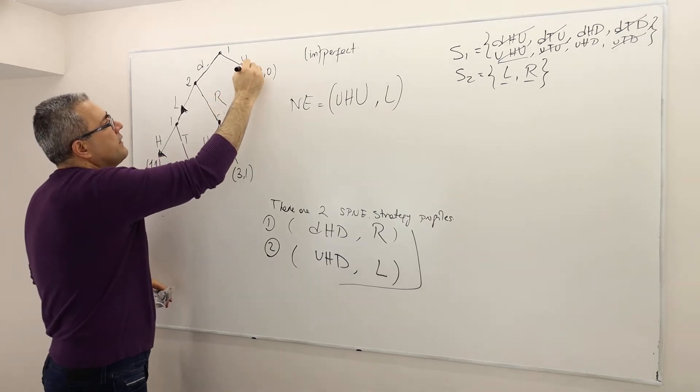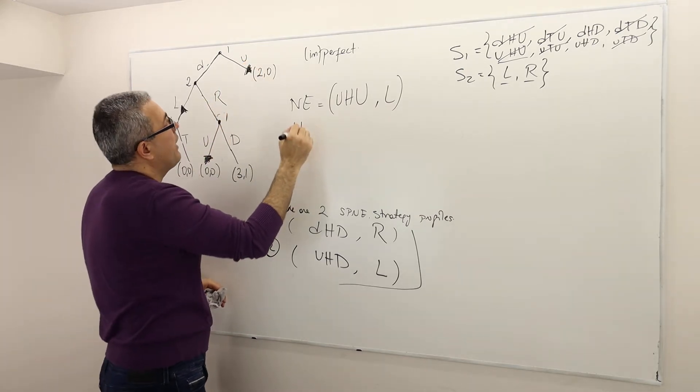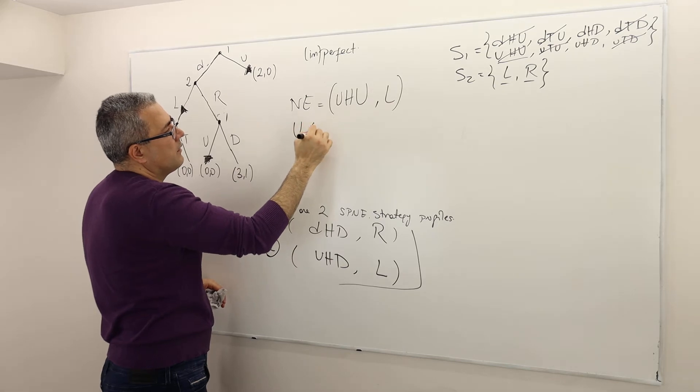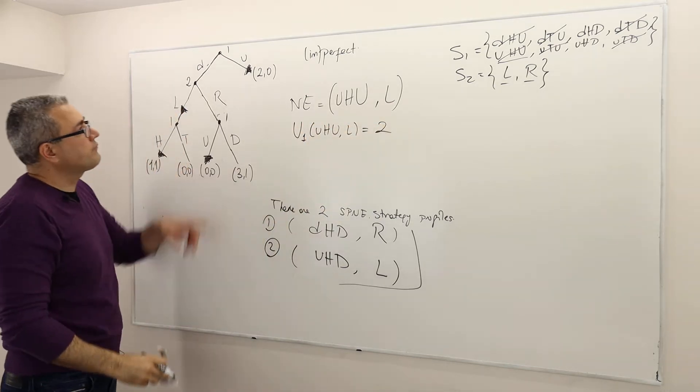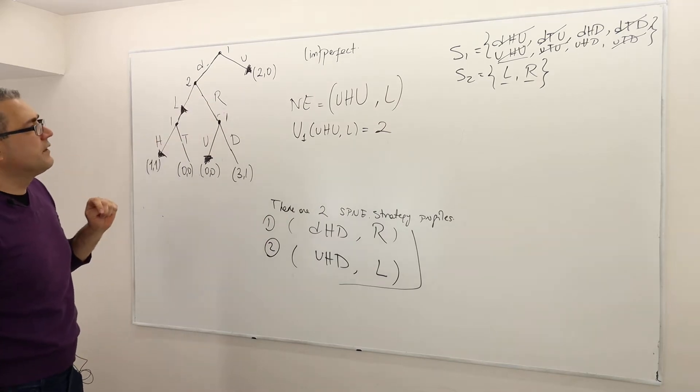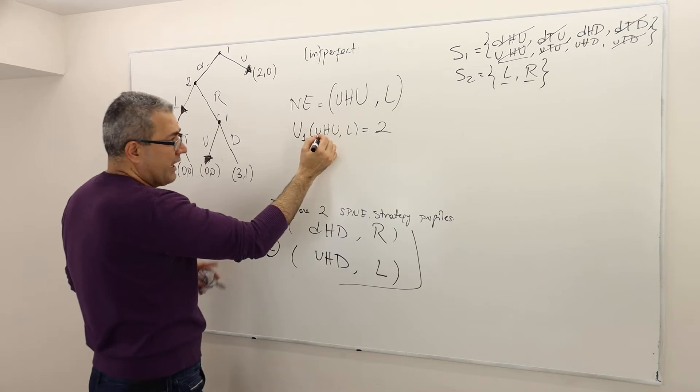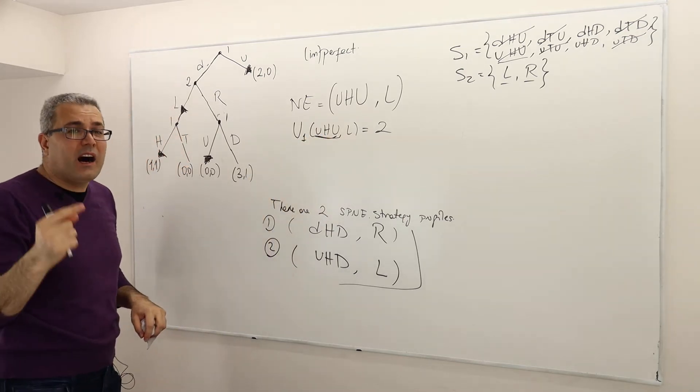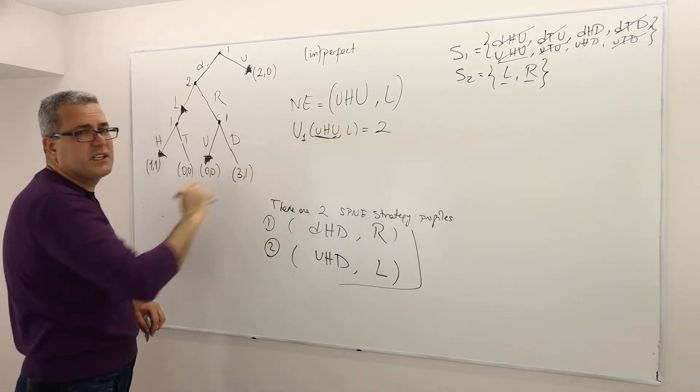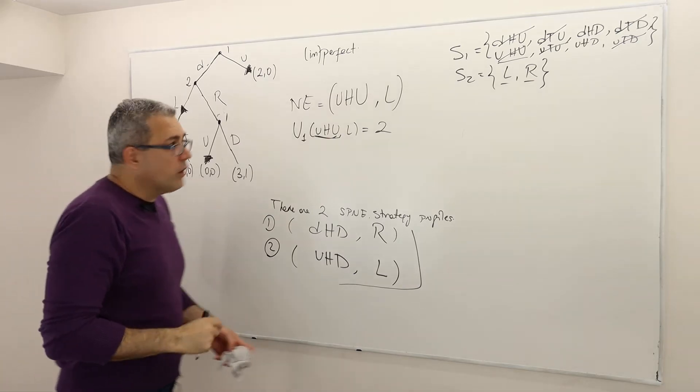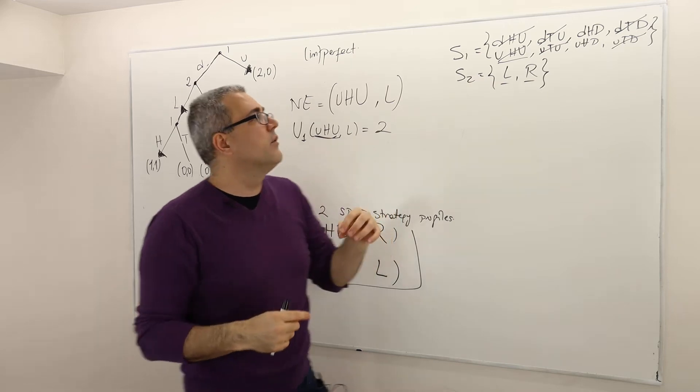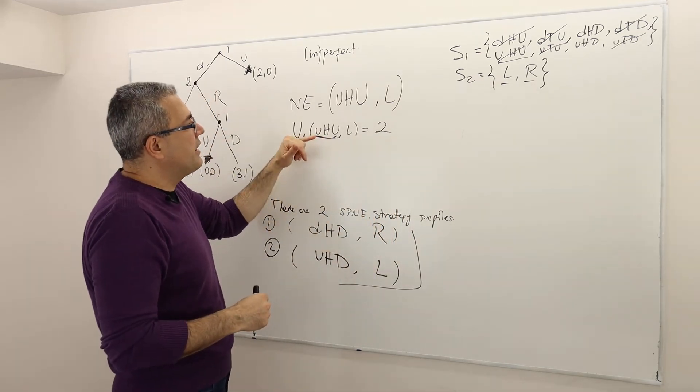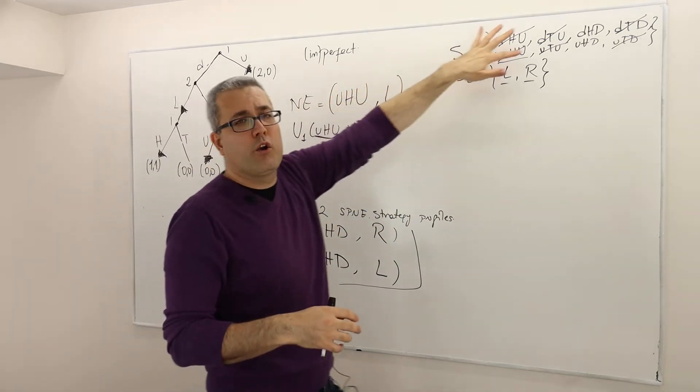So if you look at these arrows, clearly payoff of player one is equal to 2. Well, the question is, can he achieve anything better? By player one, I mean, can he achieve any payoff higher than 2 by changing this strategy? Don't forget his strategy, he has eight strategies. So that means he can change UHU by any one of those.